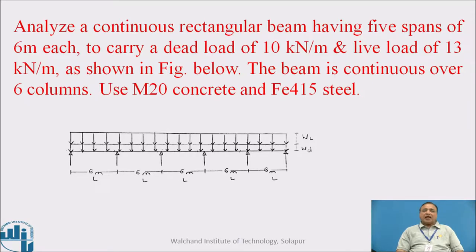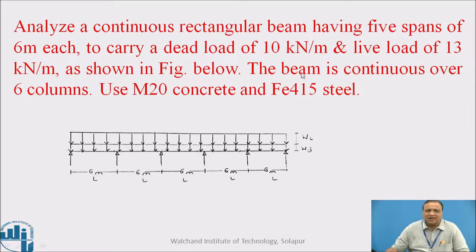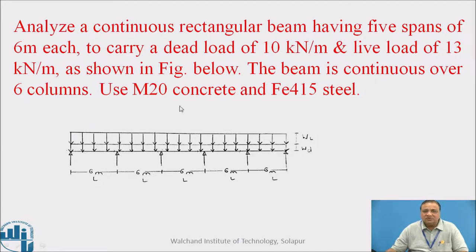Example. Analyze a continuous rectangular beam having 5 spans of each 6 meter, to carry a dead load of 10 kN per meter and a live load of 13 kN per meter as shown in the figure below. The beam is continuous over 6 columns. Use M20 concrete and Fe415 steel. This is a 5-span, 6 meter each continuous beam over which we have a dead load and a live load acting on it — both are uniformly distributed loads.